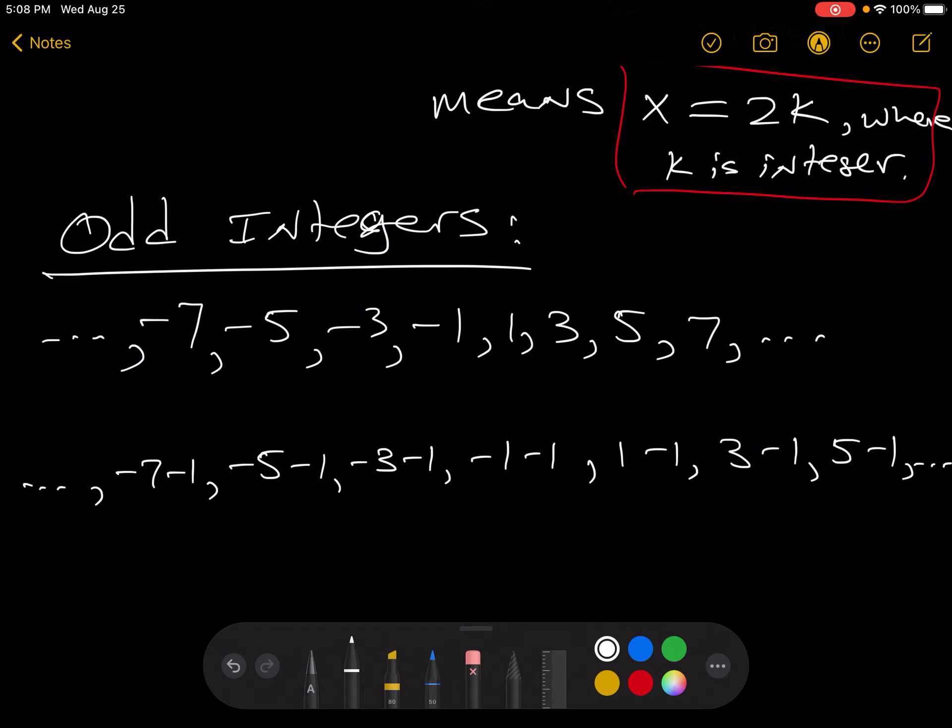So what is that? That's negative 8, negative 6, negative 4, negative 2, 0, 2, 4, and so on. These are the evens.